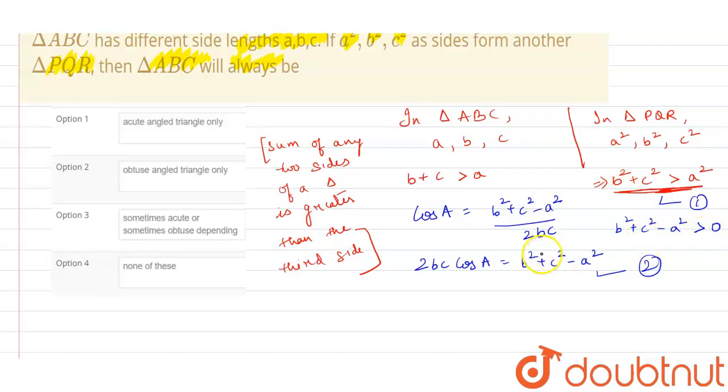We can rewrite it as B square plus C square minus A square will always be greater than 0. Here, we have the same expression as this. So we can write this expression instead of this. After this, 2BC cos A will be greater than 0. We are putting this expression in this expression.